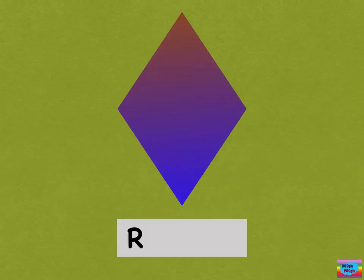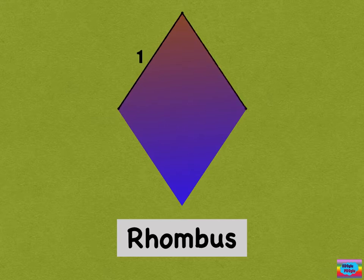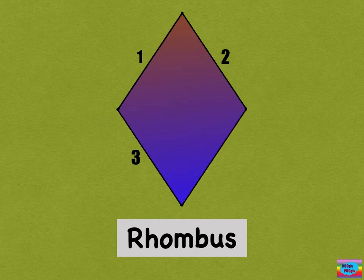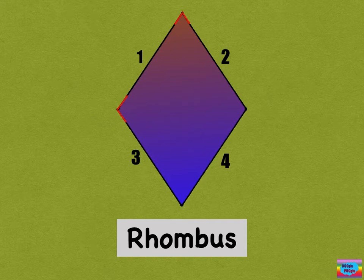you will get a rhombus, commonly known as a diamond. There's one side, two side, three side, and four side. And the corners are one, two, three, and four.